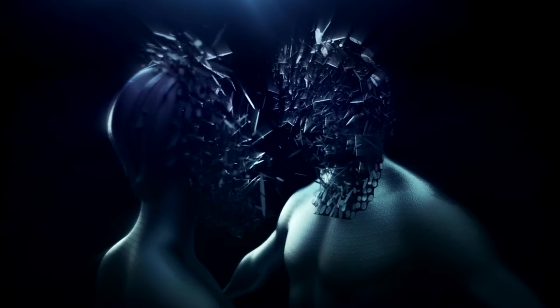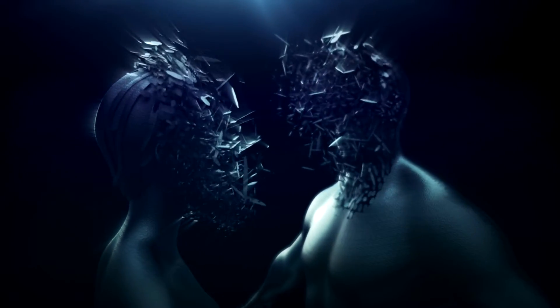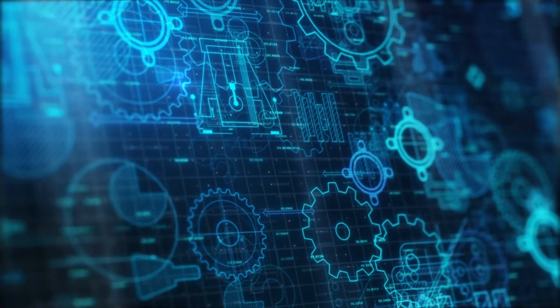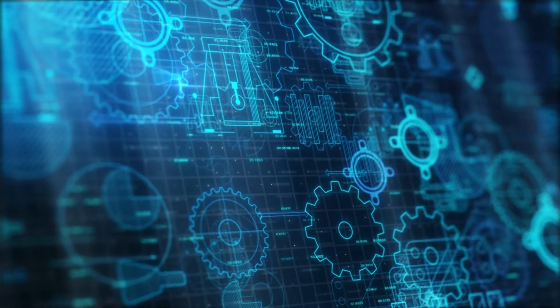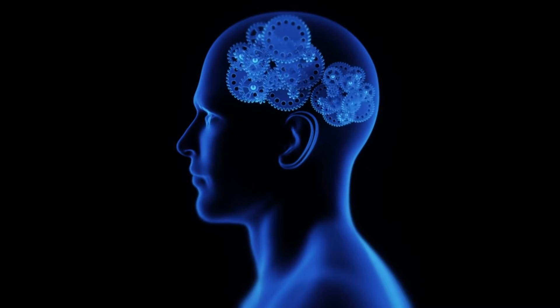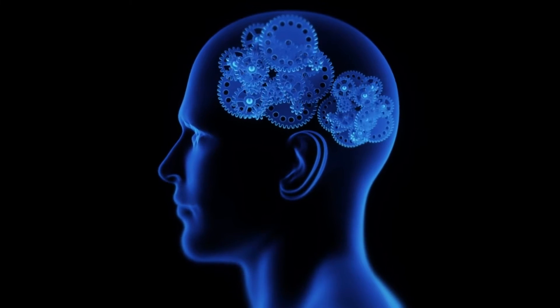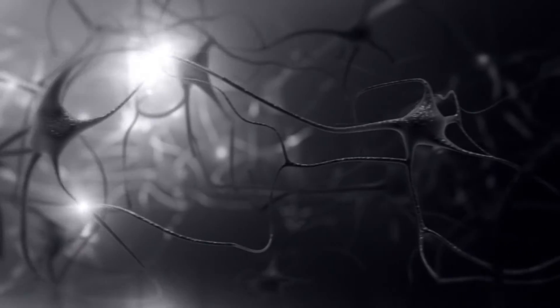One criticism of the physicalist theories of mind is that it ignores the emergent properties of complex systems. Emergent properties are properties that cannot be predicted from the properties of the system's constituent parts. For example, the property of consciousness is an emergent property of the human brain. It cannot be predicted from the properties of individual neurons.